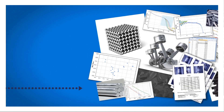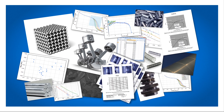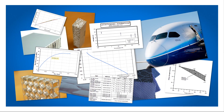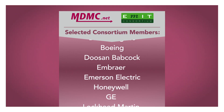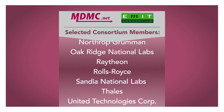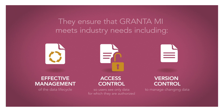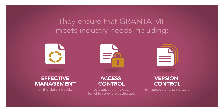Materials data is complex. How do you set up a database to manage the multi-dimensional models that describe metal properties, or deal with multiple components in a composite, their interrelationships and the impact of processing? Granta MI applies Granta's unrivalled experience of dealing with these realities. We have ready-to-go templates that provide the database structure and tools you need for key materials types and applications. These tools have been developed with customers and consortia members, ensuring that Granta MI meets industry needs, including management of the materials data lifecycle and support for related workflows.